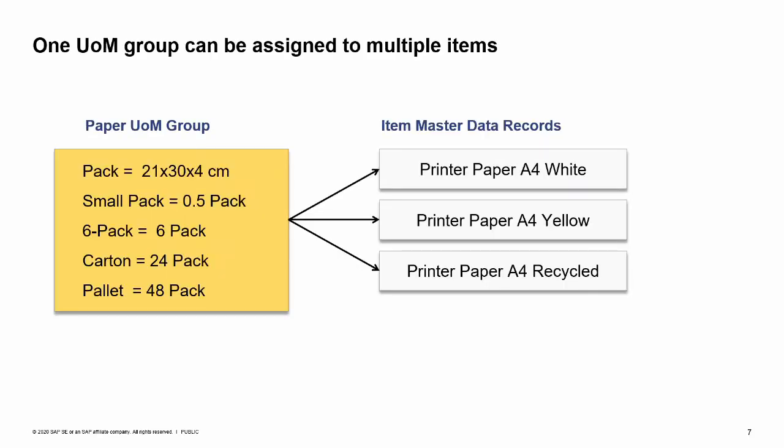OEC Computers can use this same unit of measure group for several different types of printer paper that they sell. Once a UOM group is created, it can be assigned to several item master data records. In our graphic, the UOM group for paper is assigned to three item master records that need the same type of relationships between the UOMs in the group. Because the paper UOM group has been defined flexibly, it can be used for several different types of printer paper that the company sells.